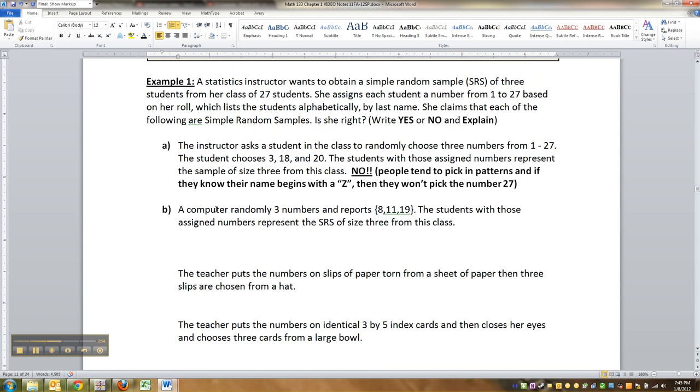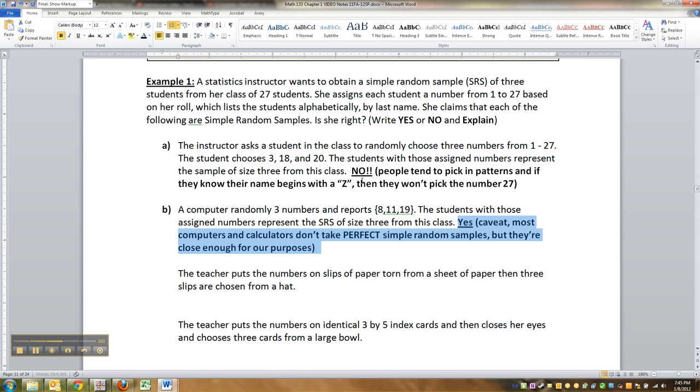What about a computer or a calculator randomly picking three numbers? 8, 11, and 19. Is that a simple random sample? Yes. With a caveat. A caveat means kind of an exception. Namely that computers and calculators actually don't make perfect random samples. They're not perfect. Get into computer programming, your first computer programming class, or maybe your second,